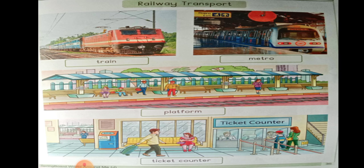So what do you see on the road? Railway transport. Railway transport means we are going to look at trains.